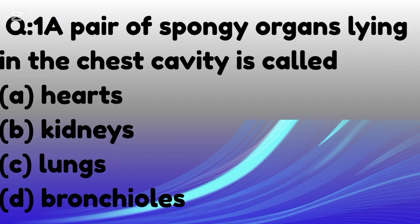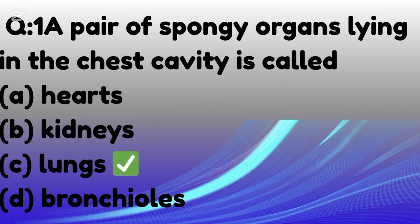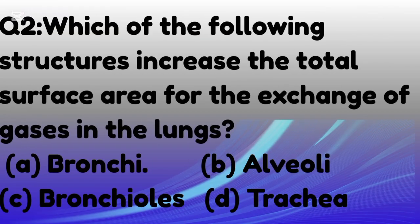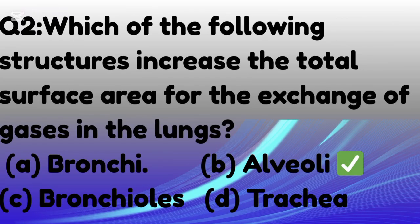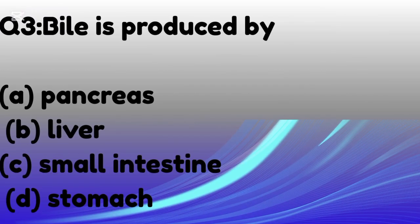A pair of spongy organs lying in the chest cavity is called — the correct option is C: lungs. Which of the following structures increases the total surface area for the exchange of gases in the lungs? The correct option is B: alveoli.